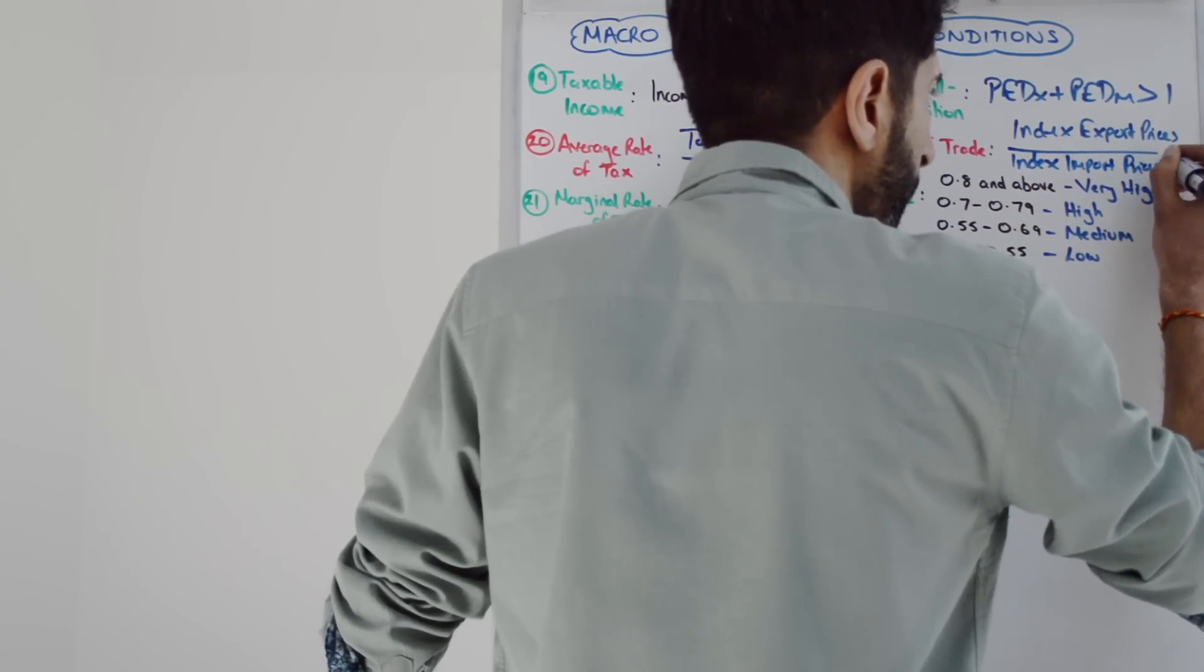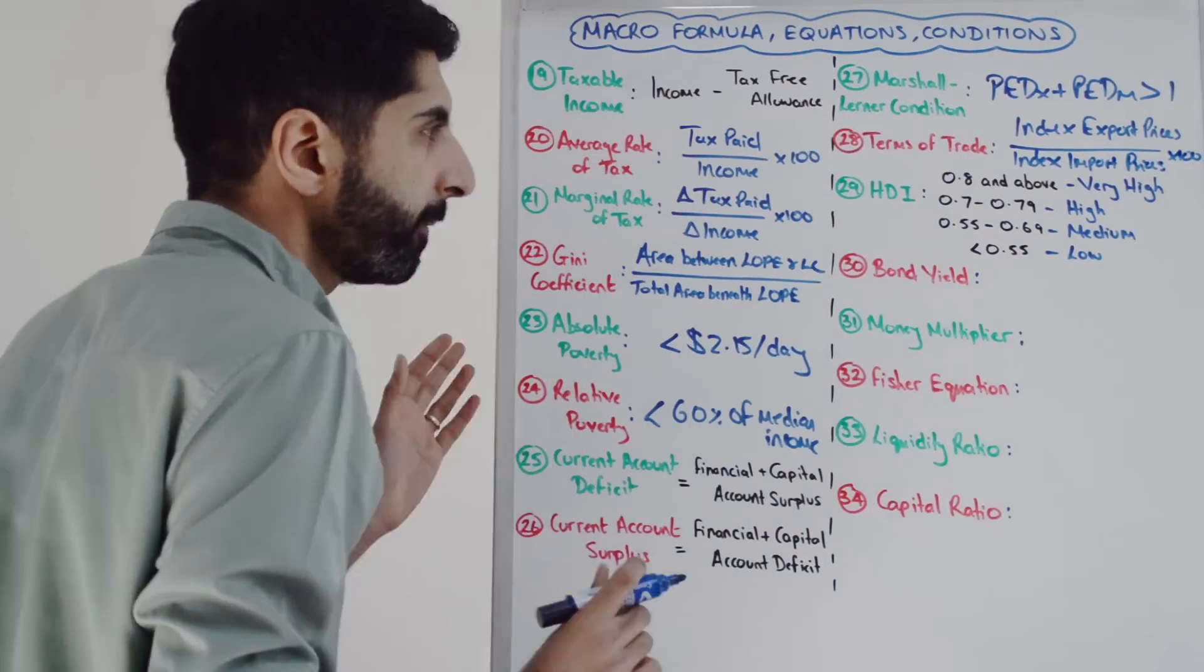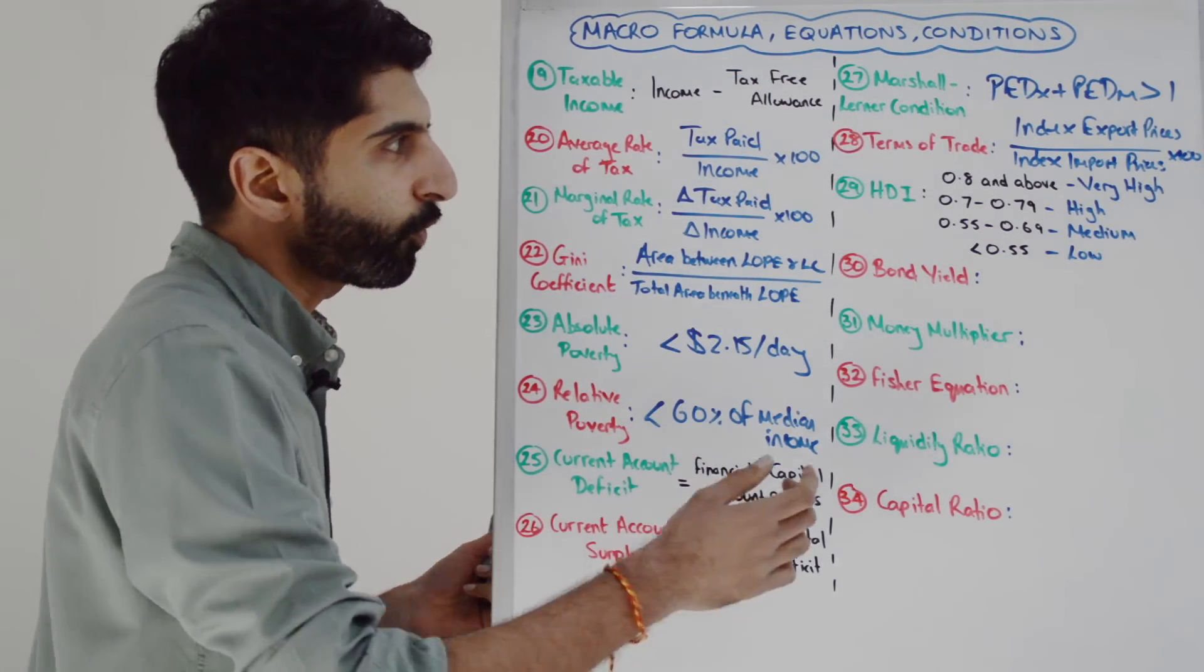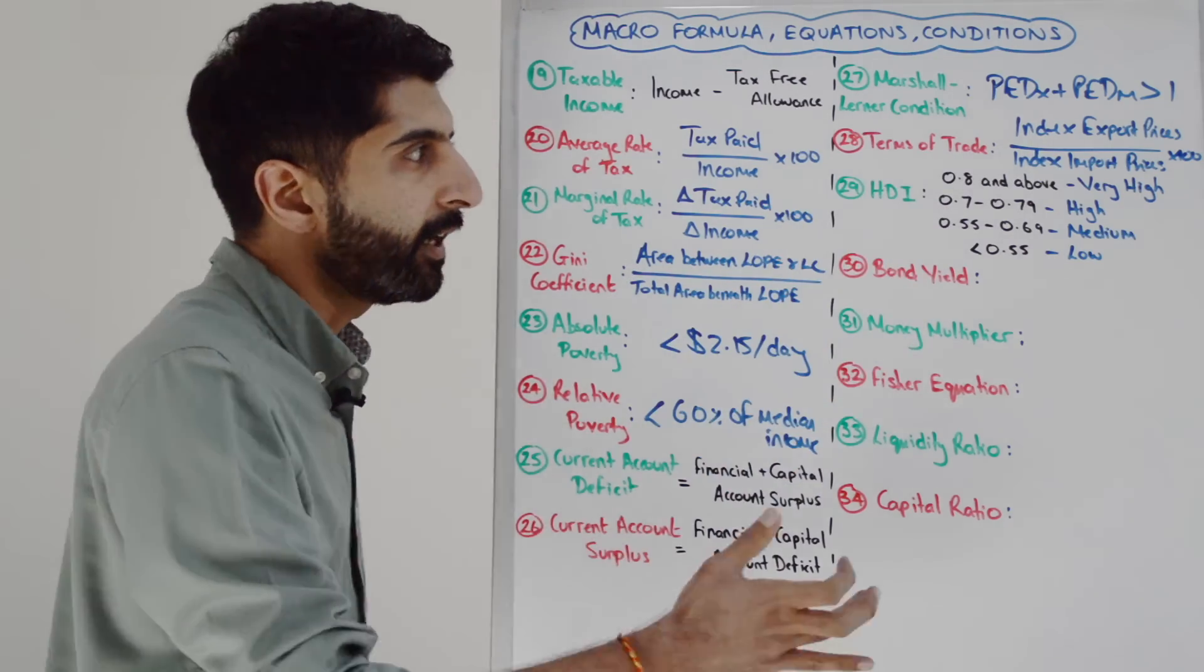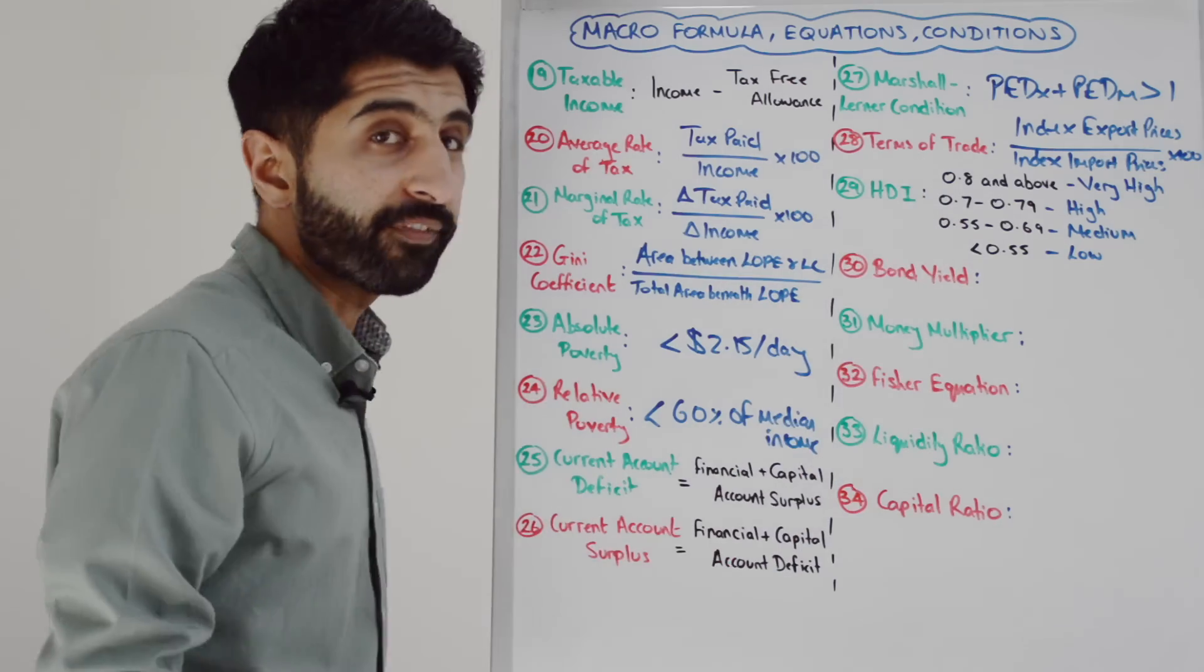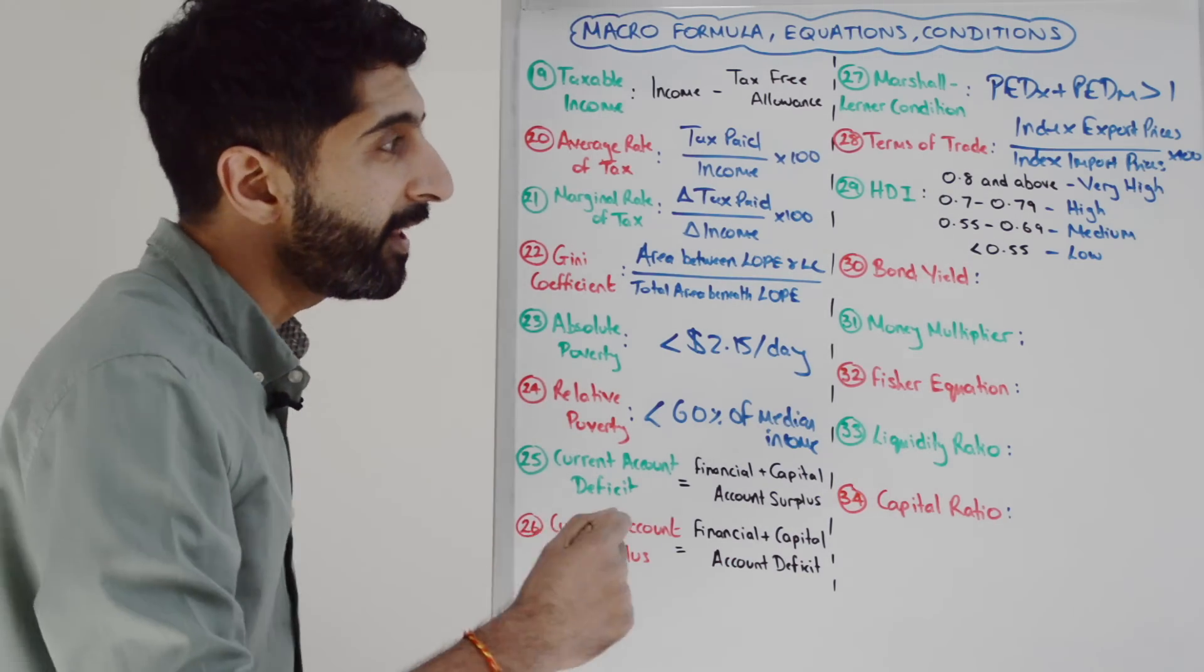Good to know how to interpret HDI scores. If a country scores 0.8 or greater, it's very high development. From 0.7 to 0.79 is high development. 0.55 to 0.69 is medium development. Anything less than 0.55 is low development.